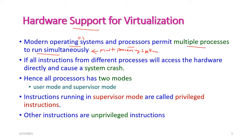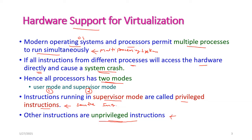Multiple processors can execute simultaneously, but if all instructions from different processors try to access the physical hardware directly, the system will crash. Hence, all processors have two modes: user mode and supervisor mode. Instructions running in supervisor mode are called privileged or sensitive instructions, while all other instructions are unprivileged instructions that run in user mode.